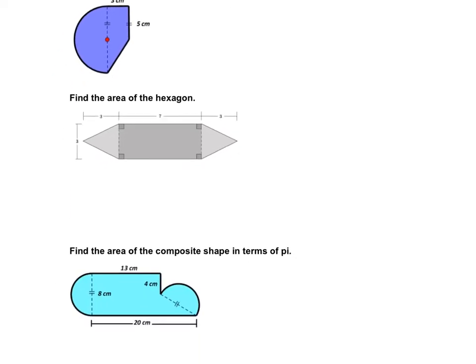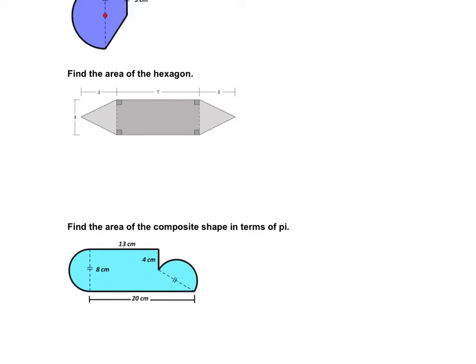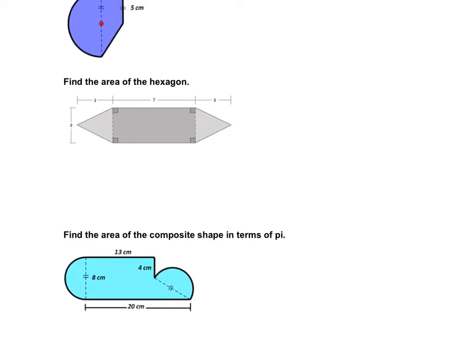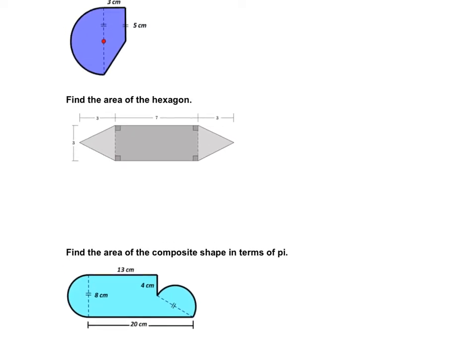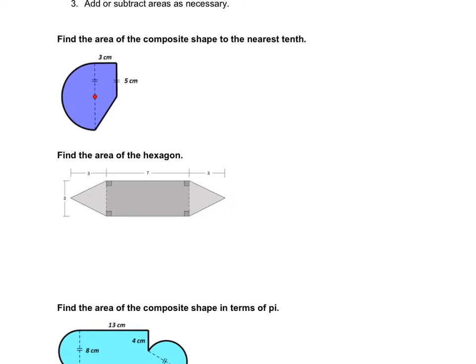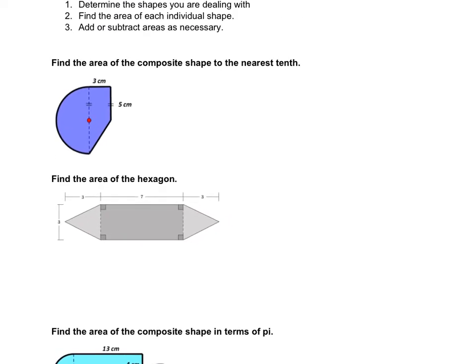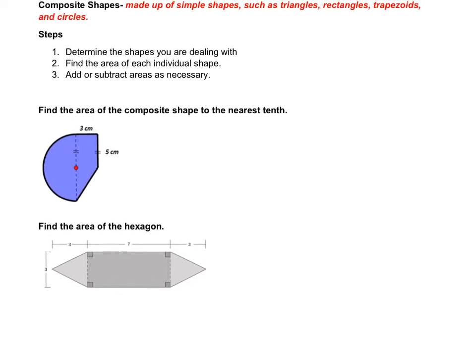So if you look through the examples we're going to be doing today, we're going to want to find the area of these shapes, but here's the issue. They're not traditional shapes, they don't have a real name. What they are is they're a shape that's made up of a bunch of little shapes or a bunch of other ones.